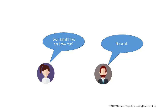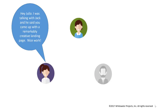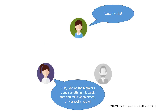Jack is an introvert and he hadn't planned on saying anything about it. So then you go to Julia — casually in the lunchroom or grabbing coffee — and say, 'Hey Julia, I was talking with Jack and he said you came up with a remarkably creative landing page. Nice work.' Julia is flattered. She says, 'Wow, thanks,' and now she feels appreciated. So you ask her, 'Is there anybody on the team who's done something this week that you really appreciated or thought was helpful?' And you've just completed the appreciation acceleration protocol.